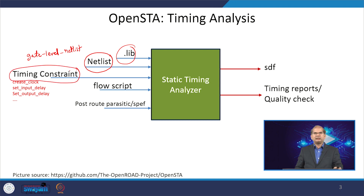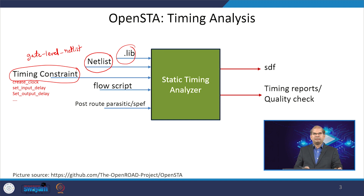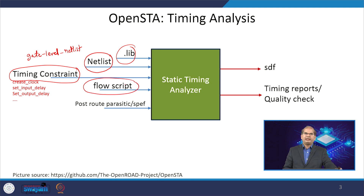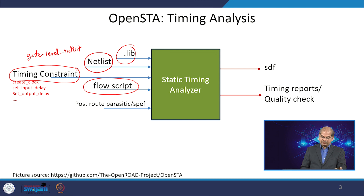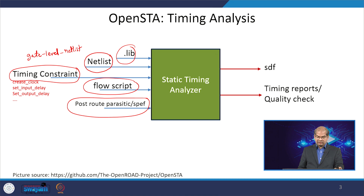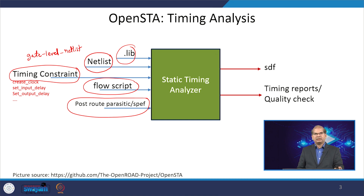The third input is the timing constraints, such as create clock, set input delay, and set output delay — all of these should be given as input to the Static Timing Analysis Tool. The fourth input is a script containing input conditions. The fifth input is the post-route parasitic extraction file — the Standard Parasitic Exchange Format — which also goes as input to the tool.